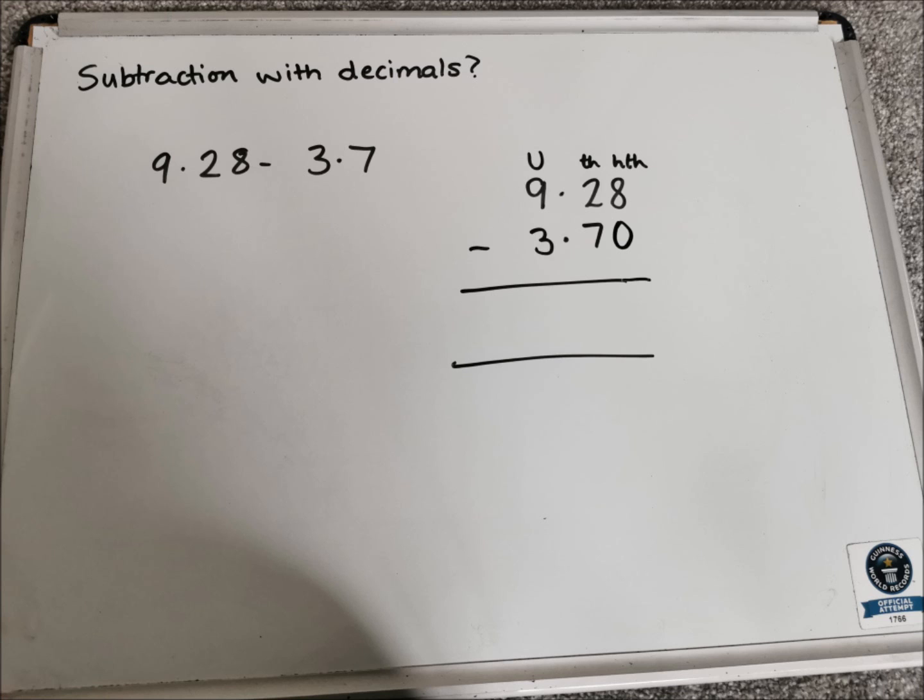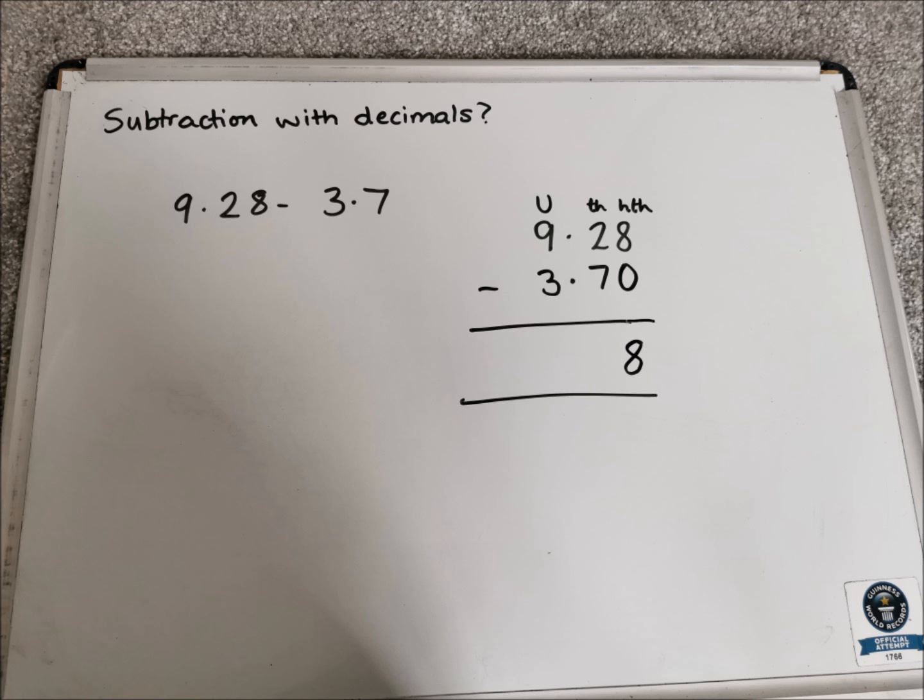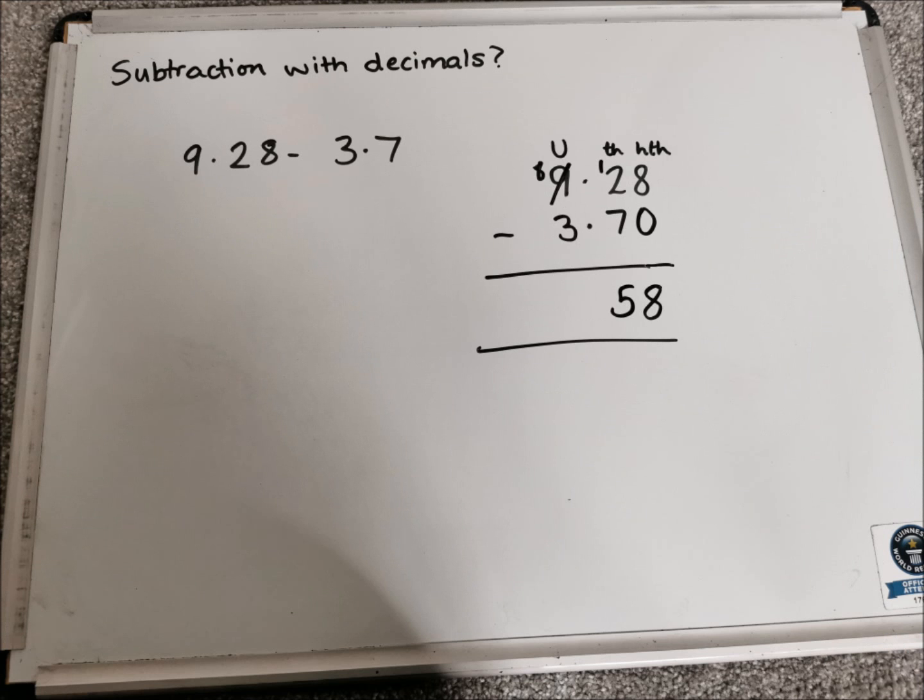So start with the hundredths column. And we've got 8, take away 0. So that's just 8. The tenths column is 2, take away 7. So we're going to have to borrow from the units. So the units becomes 8, and we move 1 over into the tenths column. So now we've got 12, take away 7, which is 5.